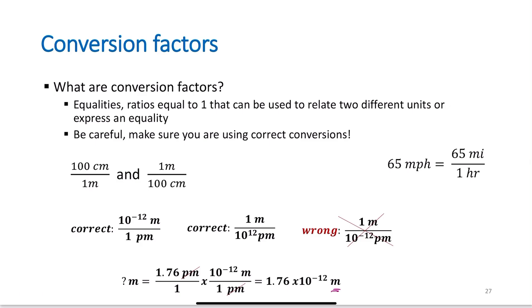Conversion factors are equalities - ratios equal to 1 that can be used to relate two different units. Let's say I take 9 and multiply it by 1. It's still 9. That's all I'm doing here, just through units. The number will change because I'm converting to a different unit. If I have 100 centimeters, that equals 1 meter. I know it takes 100 centimeters to equal 1 meter, or 1 centimeter is 0.01 meters.